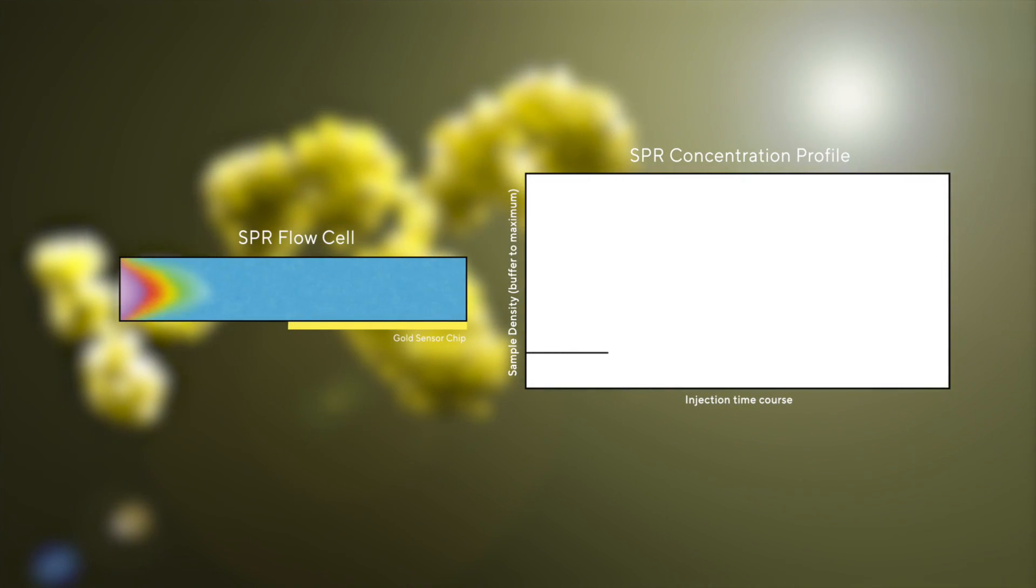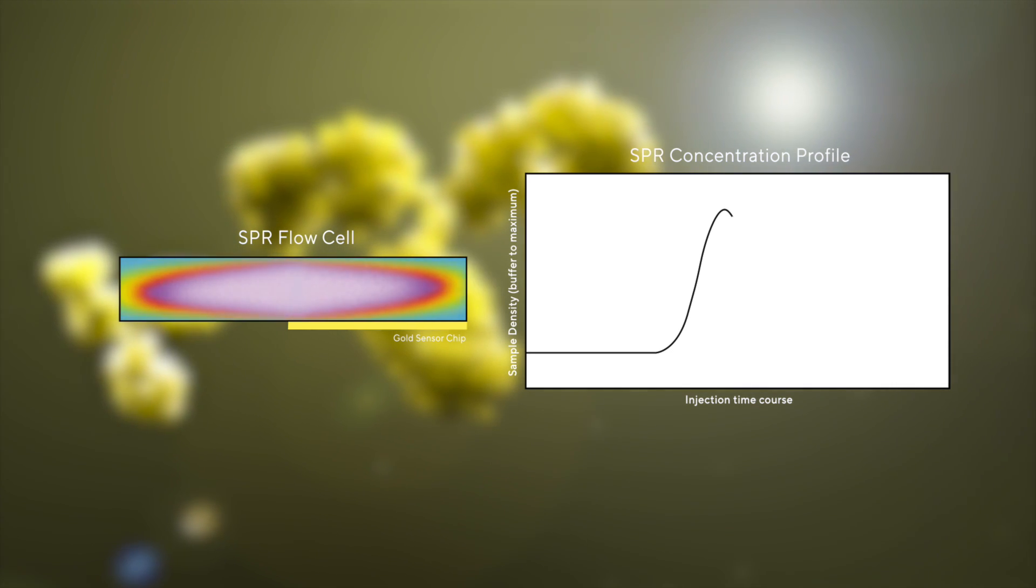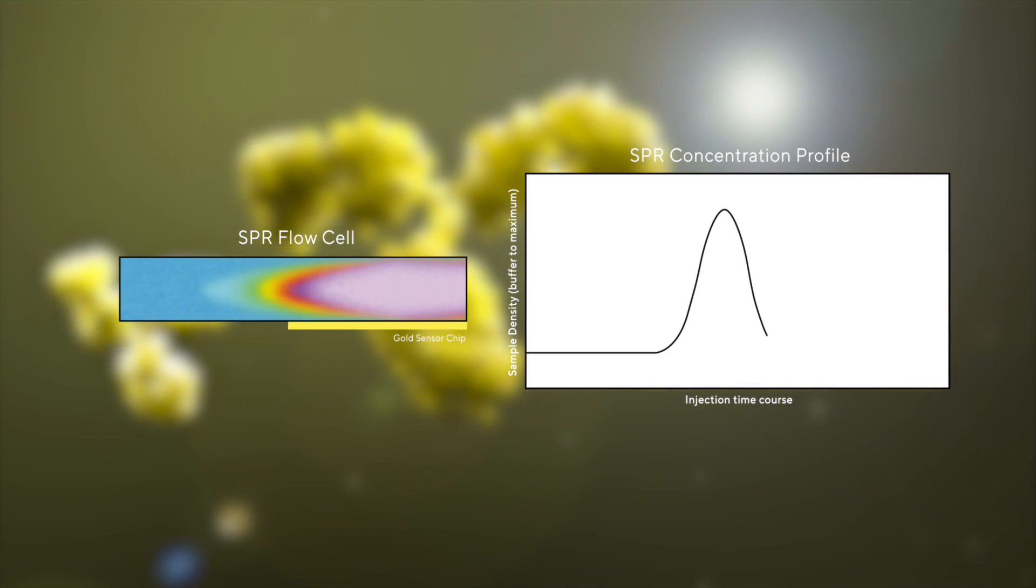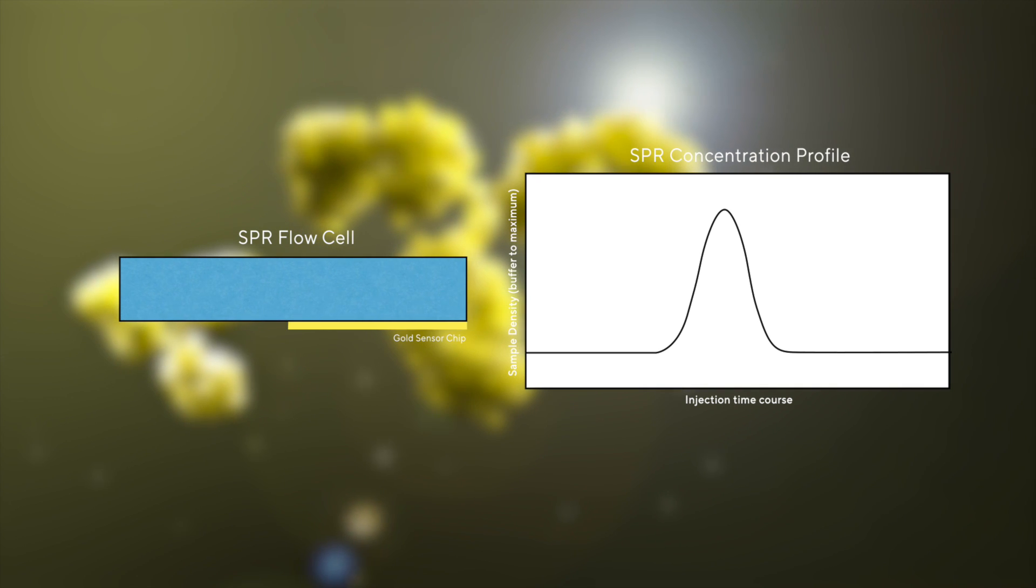1-step pulse injections can rapidly determine the diffusion coefficient and overall aggregation from as little as 5 µL of your sample, providing accurate, empirically derived results, instead of having to rely on calculated theoretical coefficients.